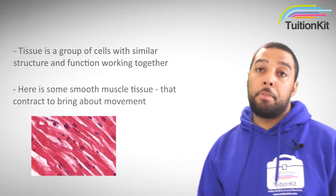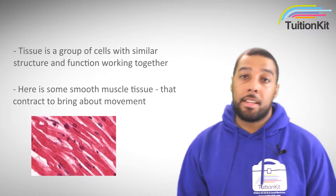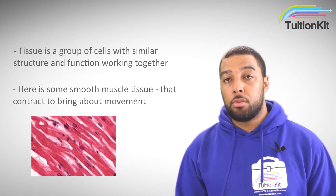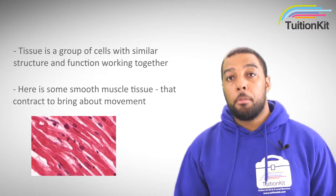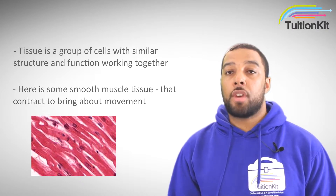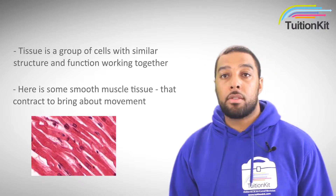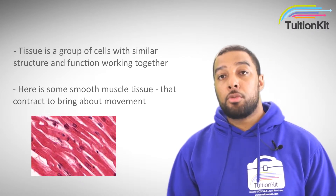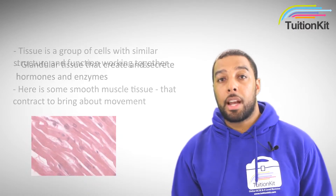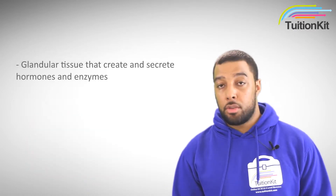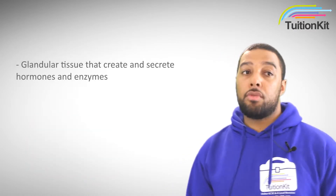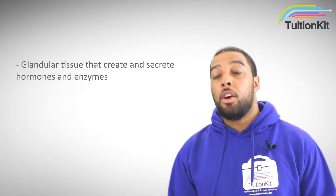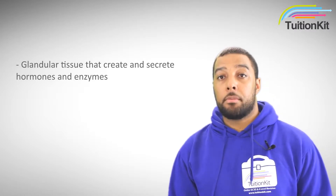If you take a look at this picture here, this is an example of some smooth muscle tissue. Muscle tissue contracts and relaxes so that we can move. There's also something called glandular tissue, which is responsible for secreting hormones and enzymes.